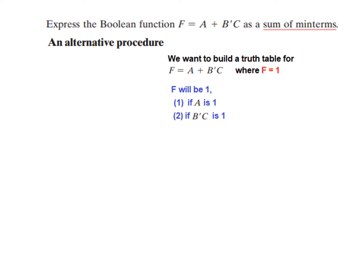Okay, so from here we can see that F will be 1 if A is 1, because these are OR terms. So either this is 1, then it will be 1, or this is 1, still it will be 1, or when both are 1, still F will be 1. So the first term is that if A is equal to 1, then F will be 1, and if B'C is equal to 1, then also F will be 1.